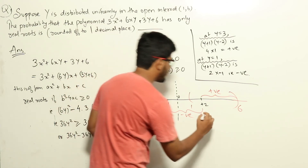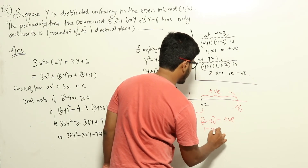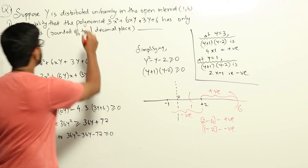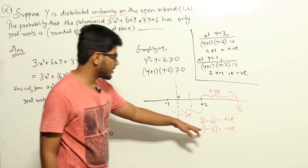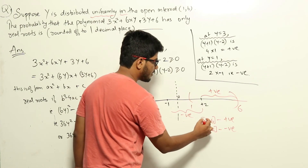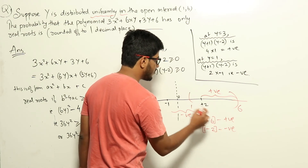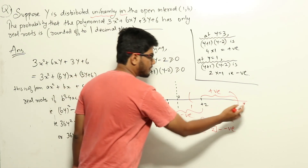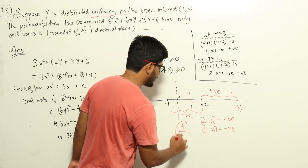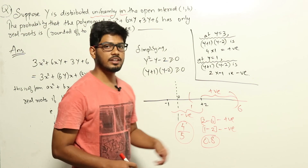Since y is uniformly distributed, the probability of choosing any point is proportional to the length of the sub-interval. The total length from 1 to 6 is 5. The polynomial has real roots for y in (2, 6), which has length 6 − 2 = 4. Therefore the probability is 4/5 = 0.8.